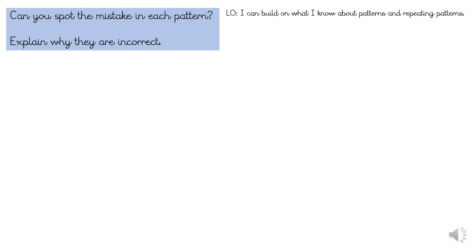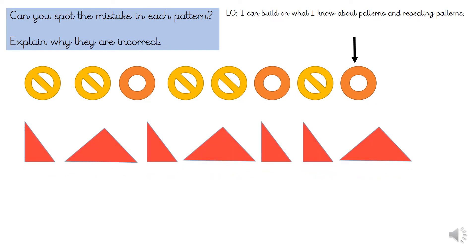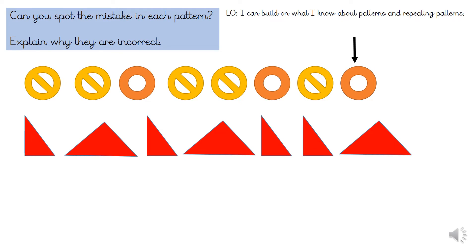Can you spot the mistake in each repeating pattern? Can you explain why the pattern is incorrect? How could you change the pattern to make it correct? Let's start with this pattern — have a close look and see where the pattern has gone wrong. Well spotted, Year 2 — you can see here it should be a yellow circle. Have a look at this pattern. Look at all the triangles carefully. What's the repeating pattern? Where has the pattern gone wrong? Yes, this triangle has been repeated.